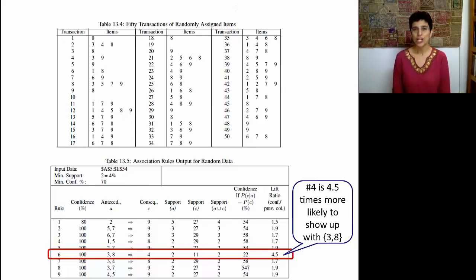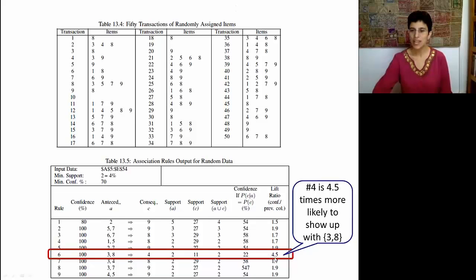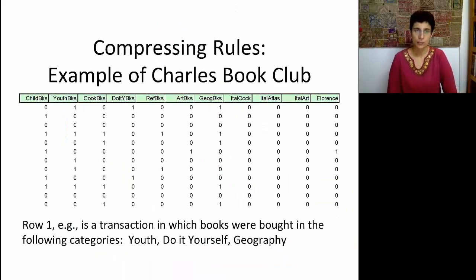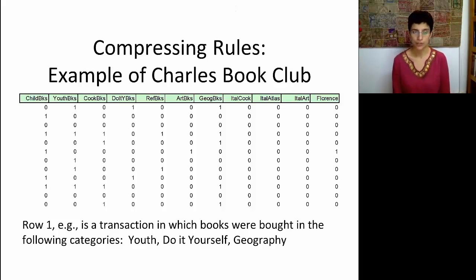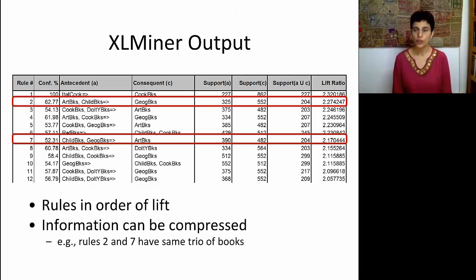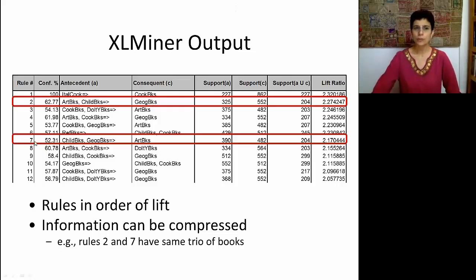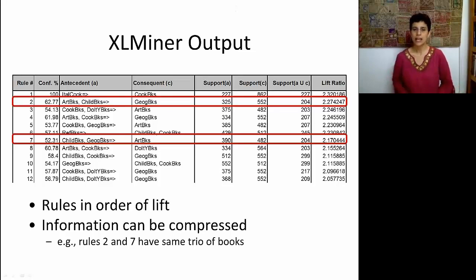There's a nice example in the book showing that for a completely random set of items generated by a simulator, you still generate rules that appear to have very high lift and confidence. So using only lift and confidence is insufficient for filtering out all random rules. In the book club example, looking at combinations of books purchased together, some rules turn out to be redundant. For instance, 'if art books and children's books, then geography books' and 'if children's books and geography books, then art books' can be condensed, reducing the number of rules and the risk of random findings.